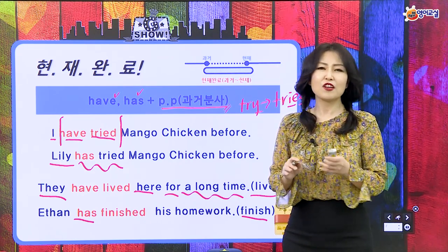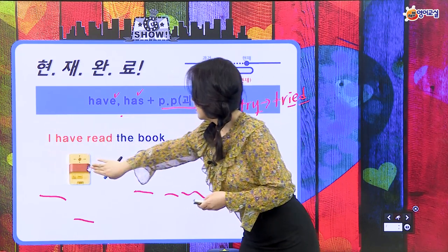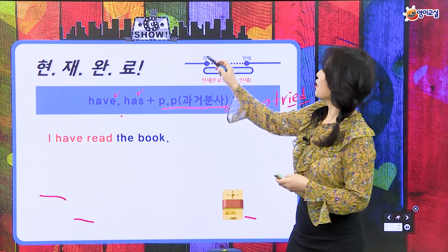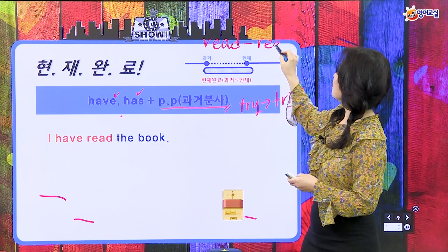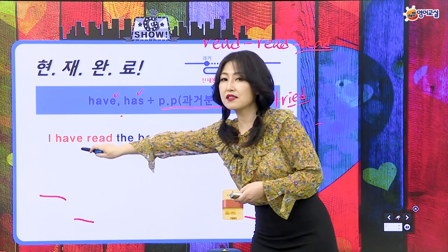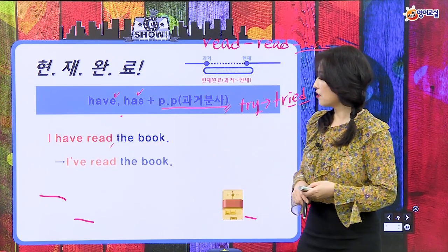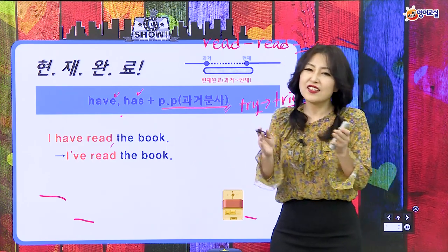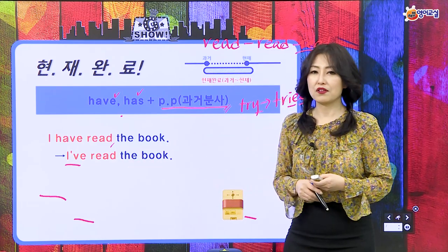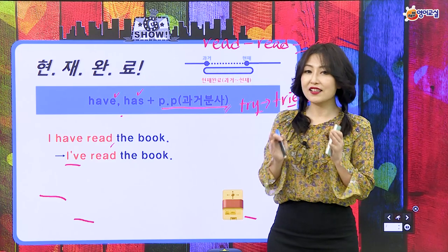현재 완료가 그렇게 어렵지 않아요. 다음 예문을 볼게요. I have read the book. 현재형은 read라고 읽고 과거는 read라고 읽고, 과거분사도 read라고 읽으면 돼요. I have read the book 하고, have와 read 해서 현재 완료를 나타내요. I have를 항상 이렇게 떨어뜨려 쓸 필요 없이 I apostrophe ve로 줄여 쓰는 거예요. I've read the book 이렇게요.